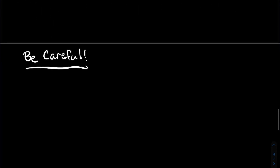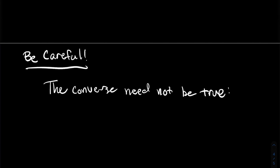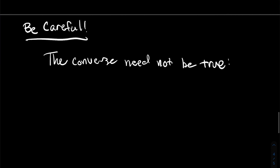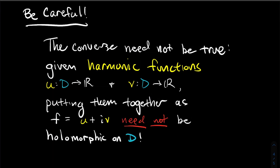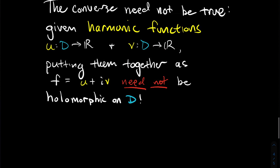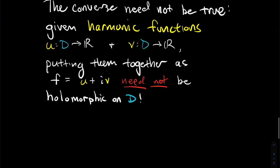Be careful — in math we just proved a P implies Q implication, and we might wonder about the converse, Q implies P. Is that true? Be careful, it's not true in general. In other words, if you're given two harmonic functions U and V and try to put them together to make a complex function U + iV, that need not be holomorphic. Harmonic pieces don't necessarily imply a holomorphic complex function.